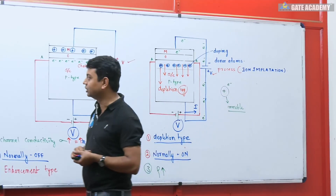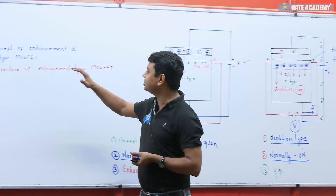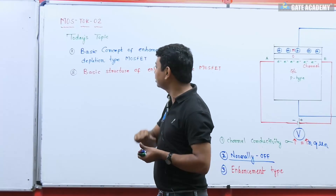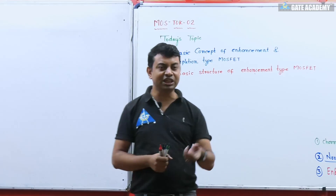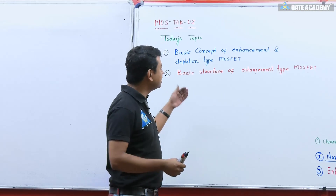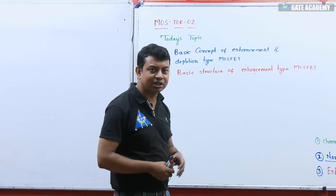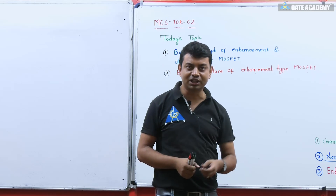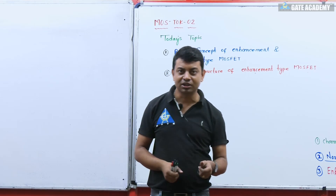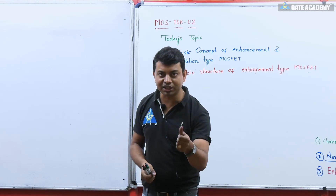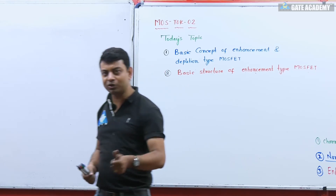That's why it is called enhancement type MOSFET — the applied potential enhances channel conductivity. This is the basic concept of enhancement and depletion type MOSFET. We are going to see the basic structure of enhancement type MOSFET in our next lecture. I will meet you again tomorrow. Thank you.